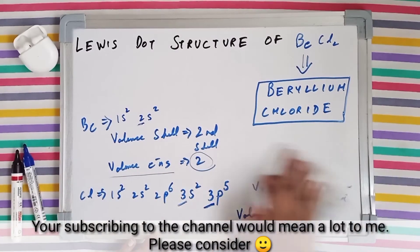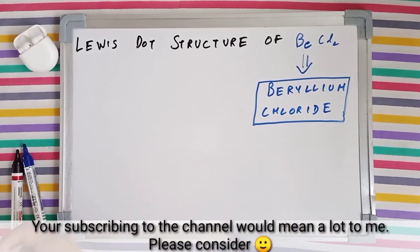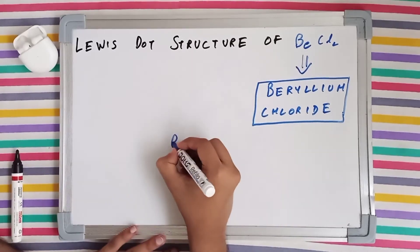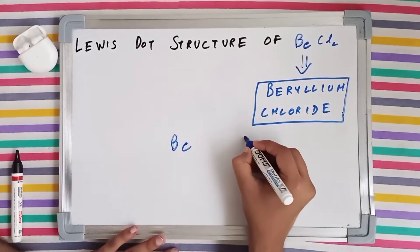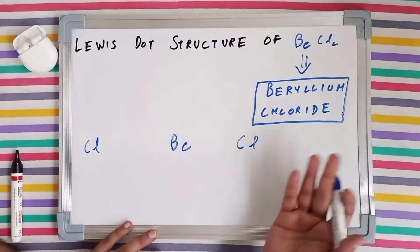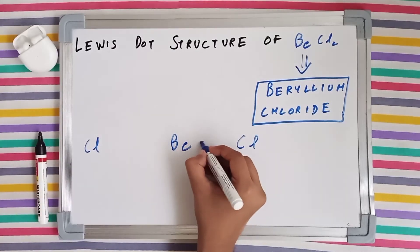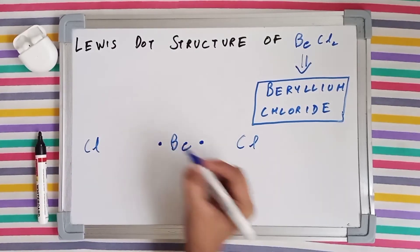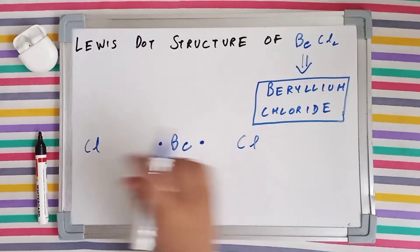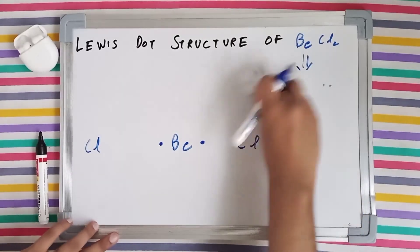Now let's draw the structure. Since we have found out the number of valence electrons for the respective atoms present in this molecule, our central atom will be beryllium surrounded by, not surrounded, but in vicinity we have got chlorine. Beryllium has got 2 valence electrons, so it's going to distribute its electrons symmetrically, and chlorine has got 7 valence electrons.